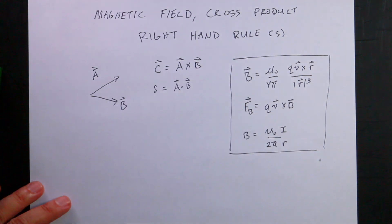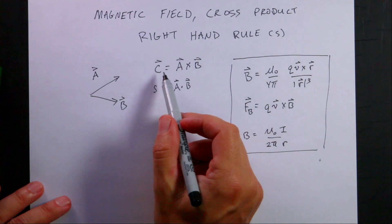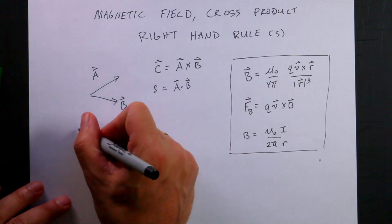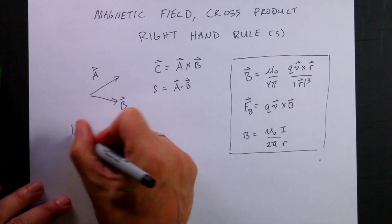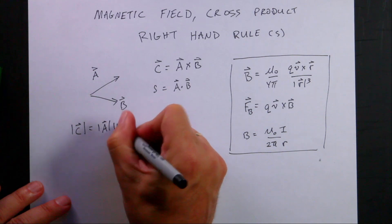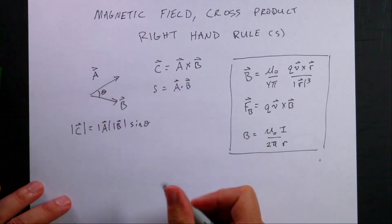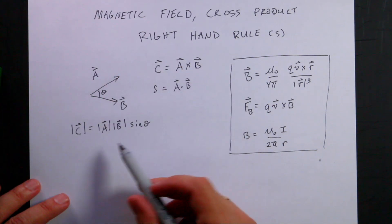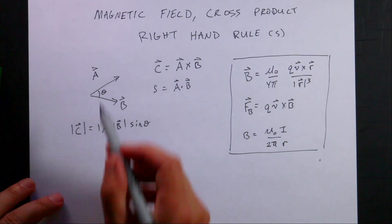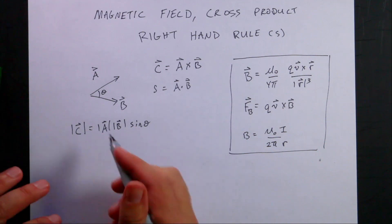There are some important properties of the cross product. You can calculate the vector exactly if you know the components, but most of the time you'll say the magnitude of vector c equals the magnitude of a times the magnitude of b times the sine of the angle theta between them. So if you know the angle and the magnitudes, you can find the magnitude of the resultant. A lot of times that angle is 90 degrees, which makes it easier, but not always.